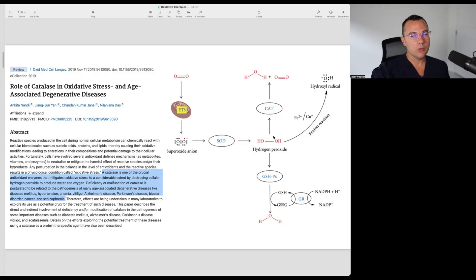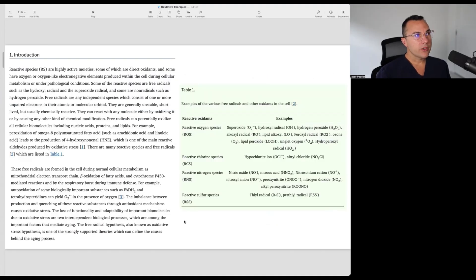So we have hydrogen peroxide, which is considered a free radical, and it can be effectively gotten rid of by a couple different enzyme systems, one of which is the glutathione system, which we've talked about. And the other is the catalase enzyme, which we're talking about in this particular video. And then if hydrogen peroxide is not gotten rid of, then that's where it can participate in the Fenton reaction and lead to more dangerous free radicals, such as the hydroxyl radical. It says here, reactive species are highly active moieties, some of which are direct oxidants, and some have oxygen or oxygen-like electronegative elements produced within the cell during cellular metabolism or under pathologic conditions. Some of the reactive species are free radicals, such as the hydroxyl radical and the superoxide radical, and some are non-radicals, such as hydrogen peroxide.